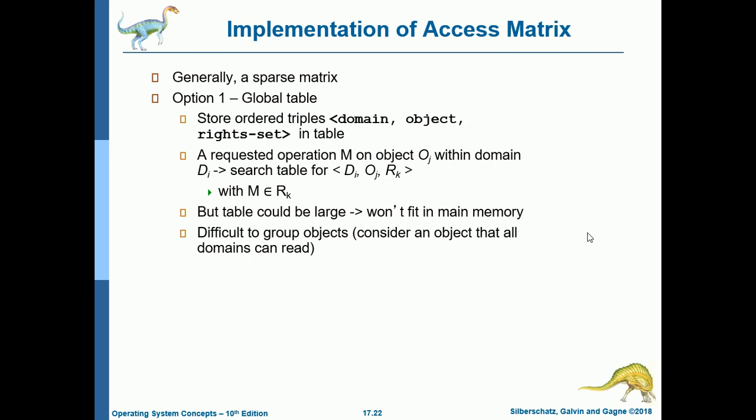Next is implementation of access matrix — generally a sparse matrix. Option 1 is a global table: store ordered triples of ⟨domain, object, rights set⟩ in a table. For a requested operation M on object O_j within domain D_i, search the table for ⟨D_i, O_j, R_k⟩ where M is an element of R_k. The problem with a global table is that it can be large — it may not fit in main memory — and it is difficult to group objects, such as an object that all domains can read.